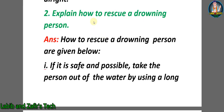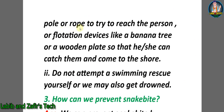Second question: Explain how to rescue a drowning person. Answer: Number one, if it is safe and possible, take the person out of the water by using a long pole or rope to reach the person, or use floatation devices like a banana tree trunk or a wooden plank so that they can grab it and come to the shore. Number two, do not attempt a swimming rescue yourself or you may also get drowned.